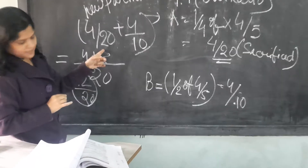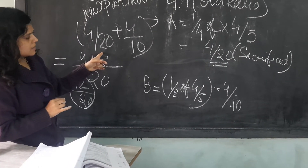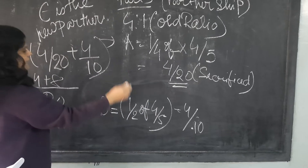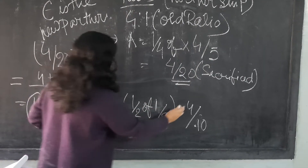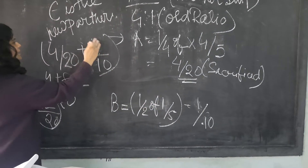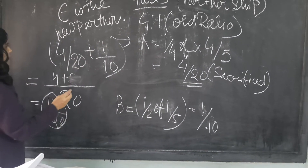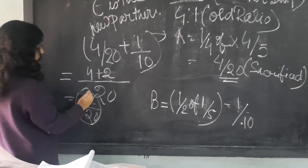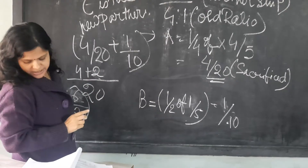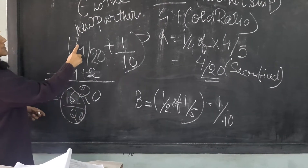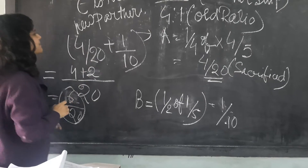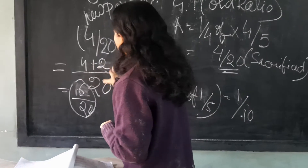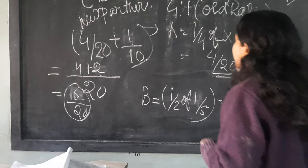I have made a mistake here. It will be 4 by 20 plus 1 by 10. B's half of his share — his share is 1/5, so B sacrifices 1 by 10. C's share of profit is 4 by 20 plus 1 by 10. 20 as denominator gives 4 plus 2, which means 6 by 20 is C's share.